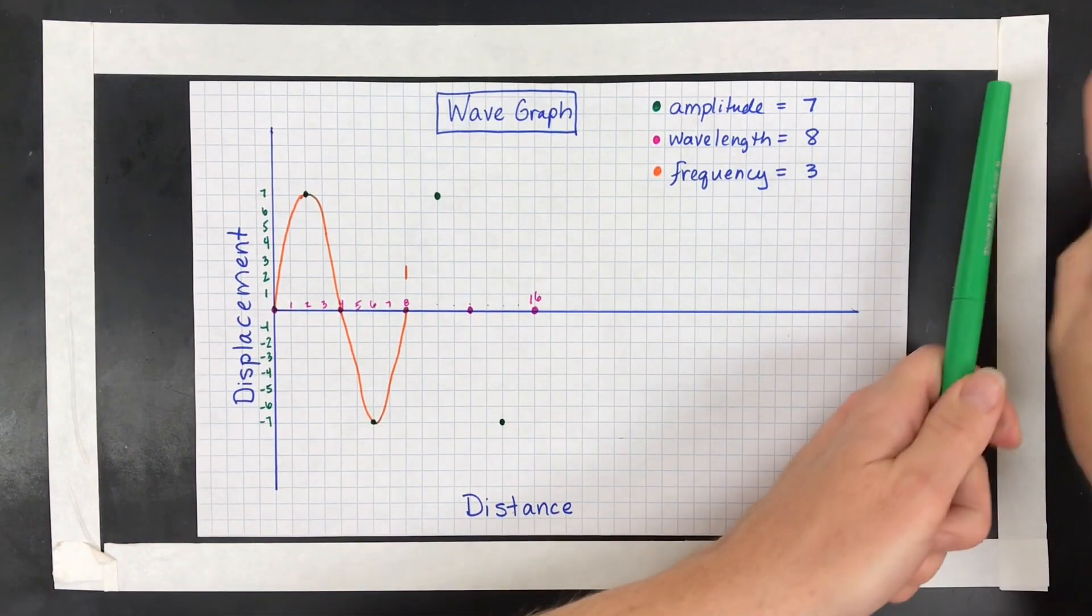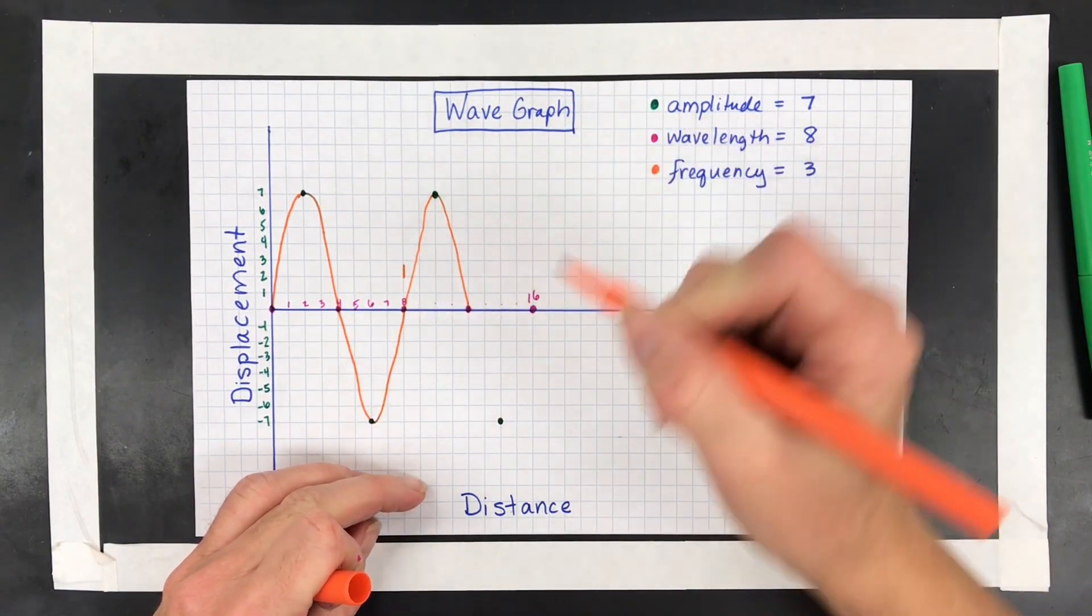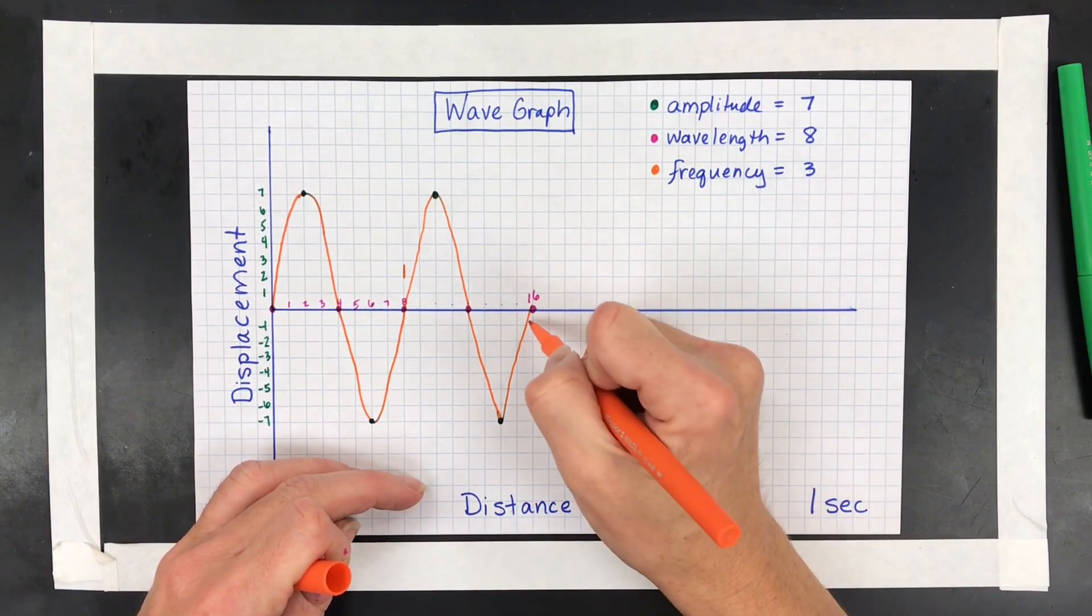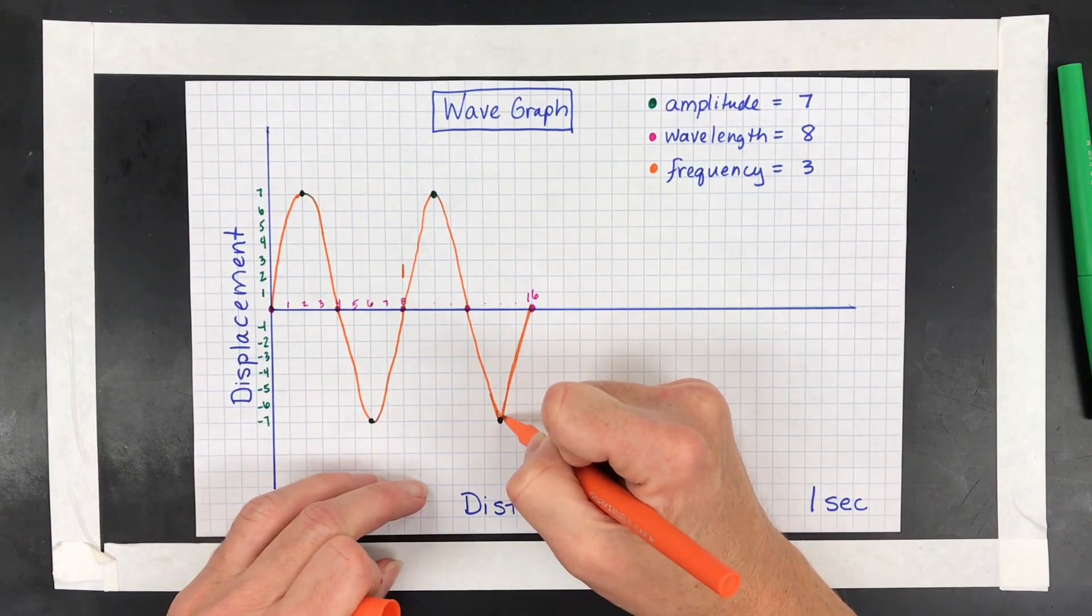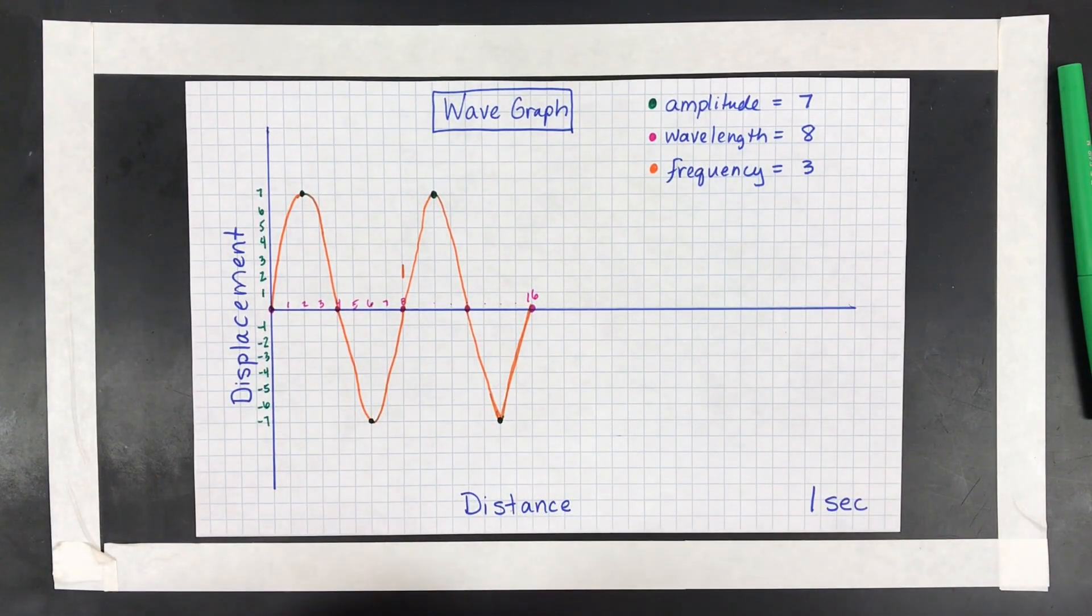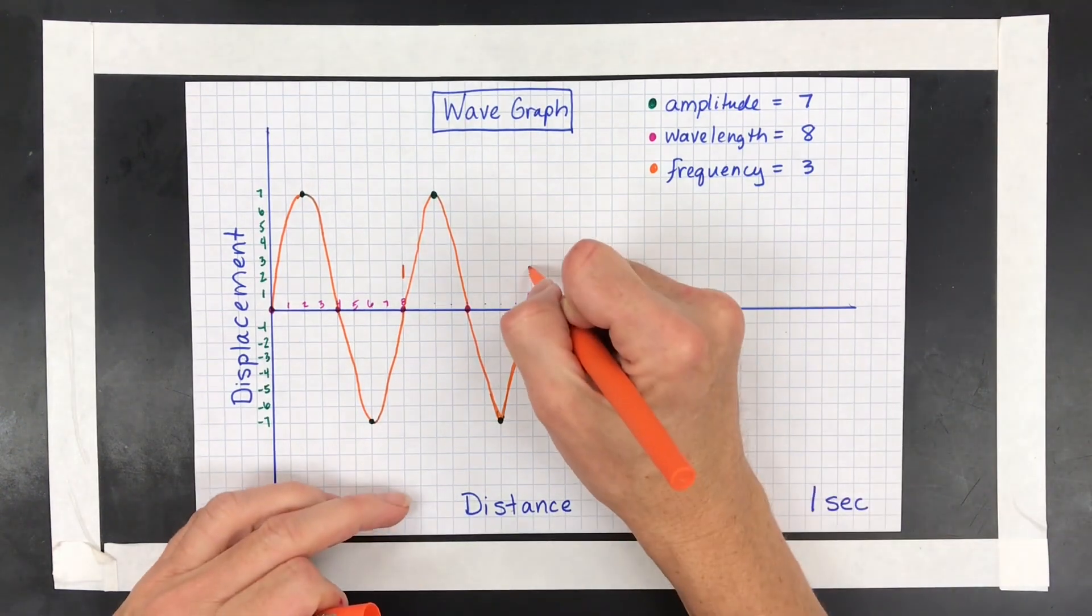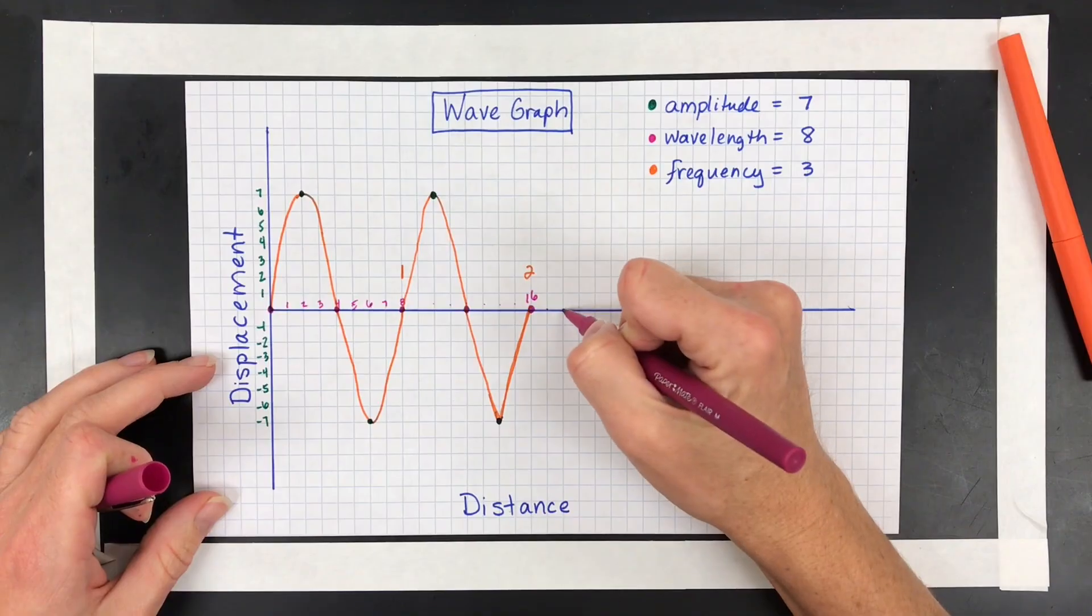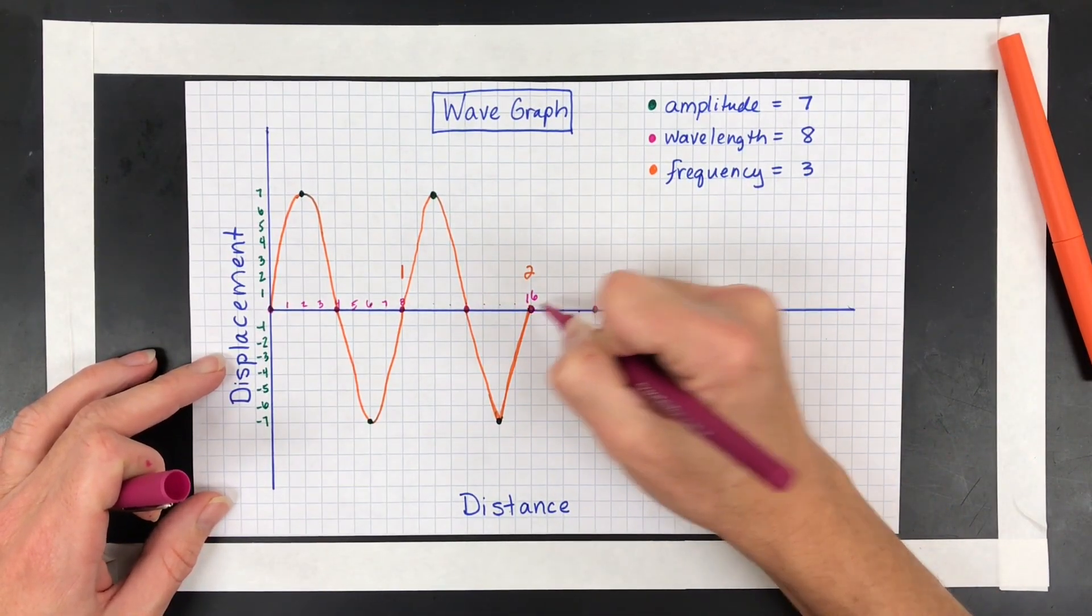And then to show that I did another cycle, I'm going to have the wave go crest through the resting point, back down to the trough and up to the resting point again. Try to kind of smooth this out a little bit. That one was a little sharp. All right, one more time because that's a frequency of 2. So I needed a frequency of 3. Same thing. 1, 2, 3, 4, 5, 6, 7, 8.